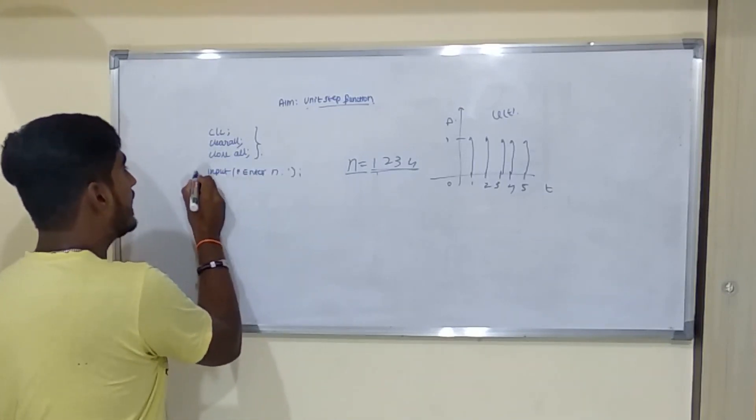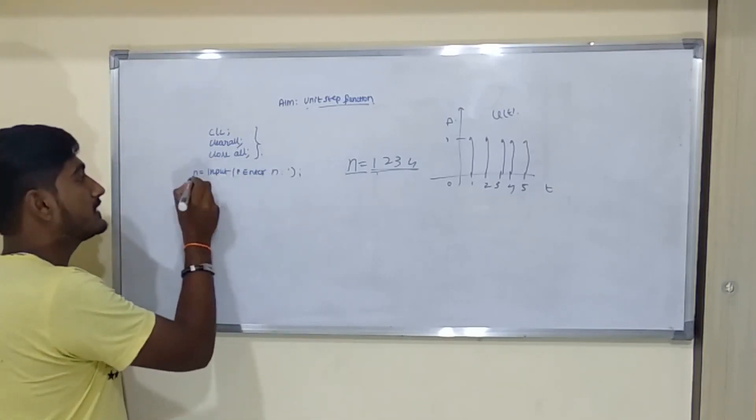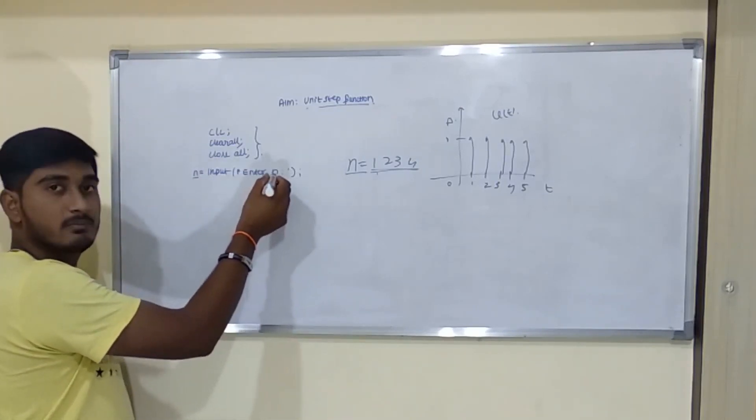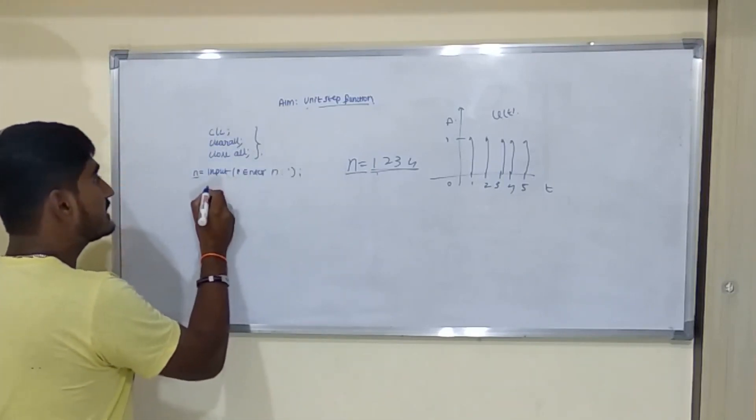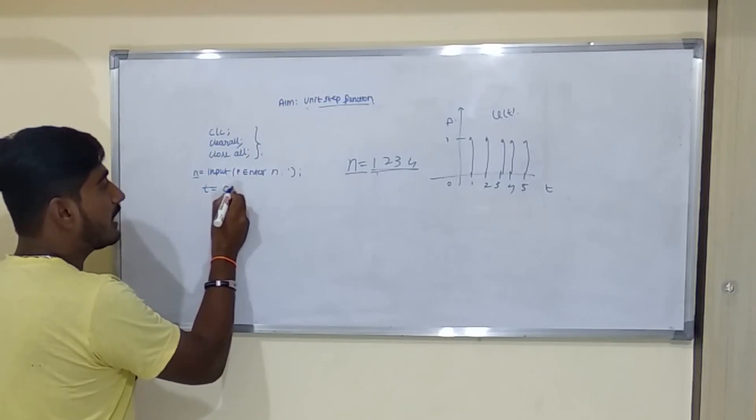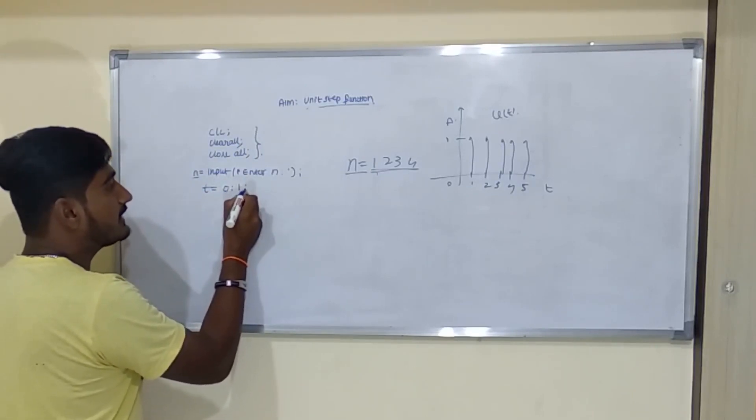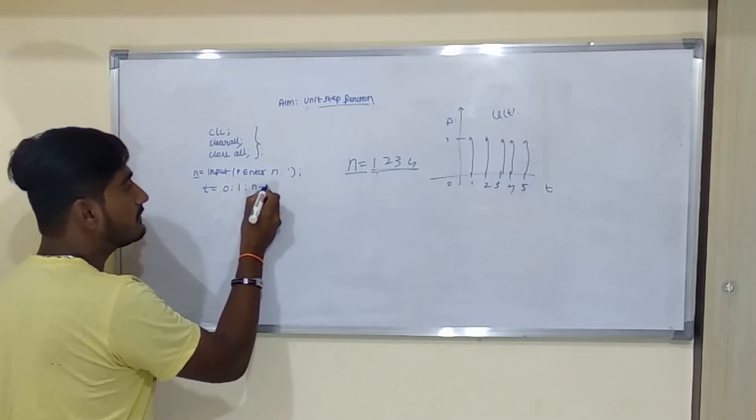We have got n is equal to input. So after this, n value will be taken the input, whatever the user types here. And this will be compared with time. So time, how we will define is, we will take this up to n minus 1.